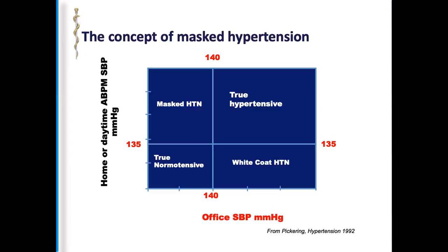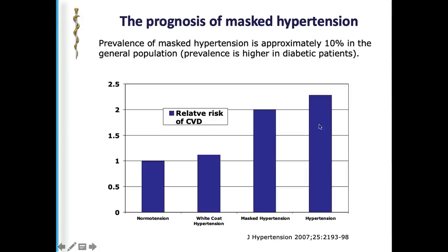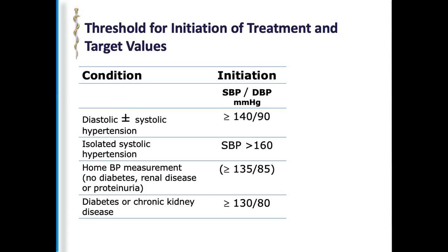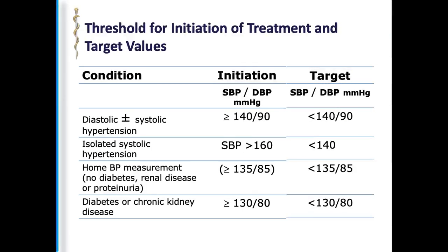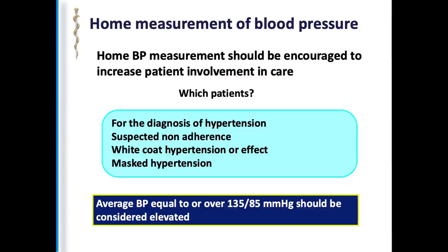For comorbid conditions there is a slightly lower average. An important concept is masked hypertension. A lot of times we may not be able to diagnose it well, and those people with masked hypertension tend to have a higher incidence risk and higher relative risk of cardiovascular disease. Another important consideration is the threshold for initiation of treatment and target values — when to initiate therapy. For diabetes it is different; for home blood pressure measurement the values are slightly different, and the target depends on what comorbidity the patient has.